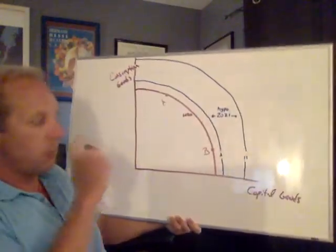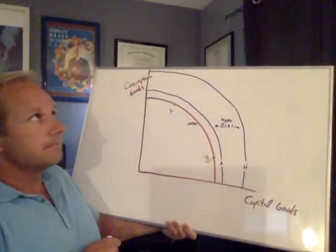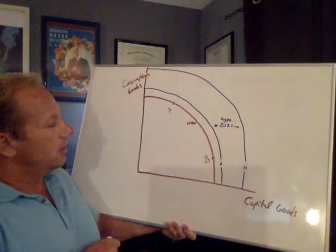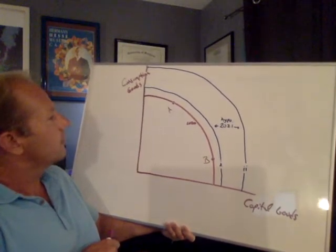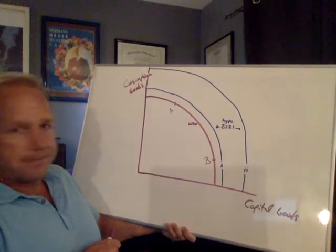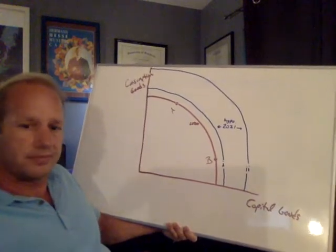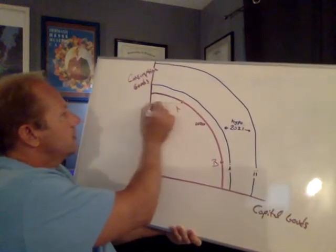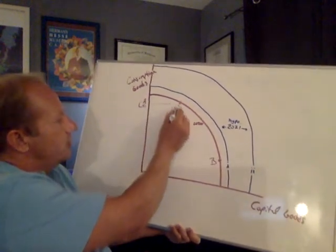If we choose to produce a point A in 2020, of those two hypothetical curves for 2021, which one are we more likely to be at? If we choose choice A today, we target point A, because we can't do A and B, we can do one or the other. If we target A this year, where are we more likely to be of those two possible outcomes next year? The answer is I, because if we choose A this year, that's a whole lot of consumption and not a lot of tools.